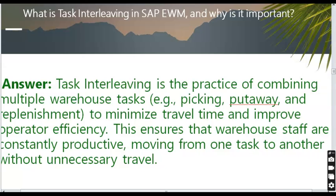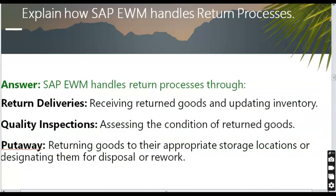Explain how SAP EWM handles return processes. SAP EWM handles return processes through return deliveries for receiving returned goods and updating inventory, quality inspections to assess the condition of returned goods, and put-away to return goods to appropriate storage locations or designate them for disposal or rework.